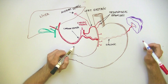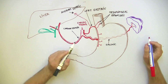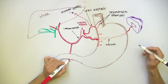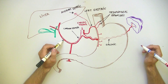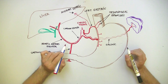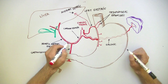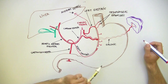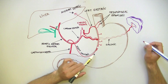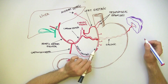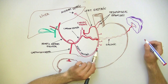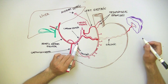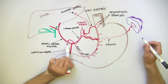Now we'll discuss about the common hepatic artery. The common hepatic artery splits into two branches: the gastroduodenal artery and the hepatic artery proper. The hepatic artery proper gives the right gastric artery, which also reaches the lesser curvature of the stomach and approximately at the midpoint will anastomose with the left gastric. Keep in mind that the right gastric artery may also arise from the common hepatic artery, but usually it arises from the hepatic artery proper.